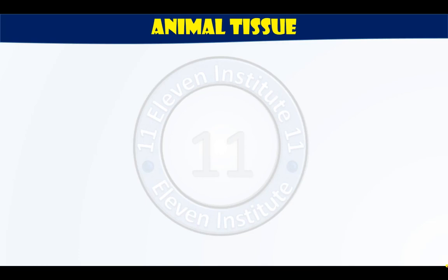Hi everybody. 11 Institute welcomes all the students of standard 9th to the subject science. We have been discussing chapter number 6, and today we are in video lecture number 6, part 6 of the chapter tissues. In this chapter we have to discuss plant tissues and animal tissues. We have already discussed plant tissues and taken a short objective type test, and from today we will move towards animal tissues.